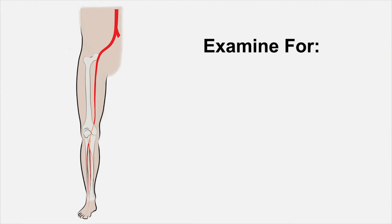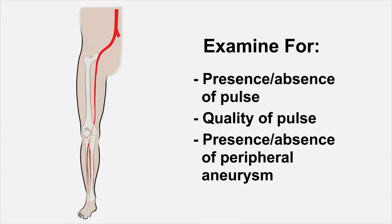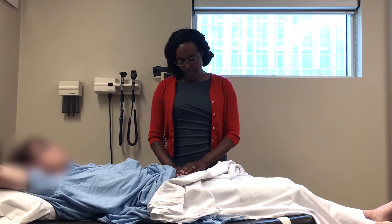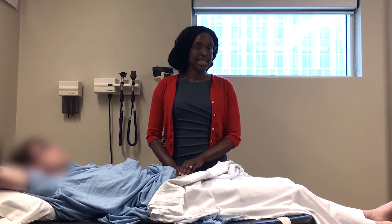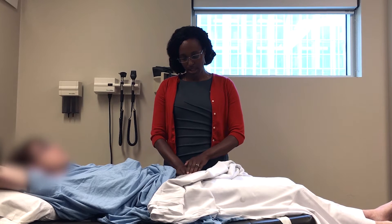The examination of the lower extremity begins with assessing the presence or absence of the pulse, the quality of the pulse, and the presence or absence of a peripheral aneurysm. The femoral is felt halfway between the anterior superior iliac spine, or ASIS, and the pubic ramus. Halfway there is the palpable femoral pulse.